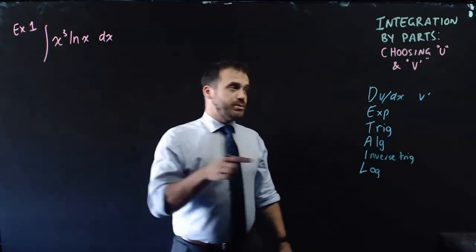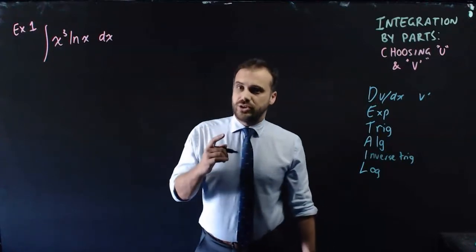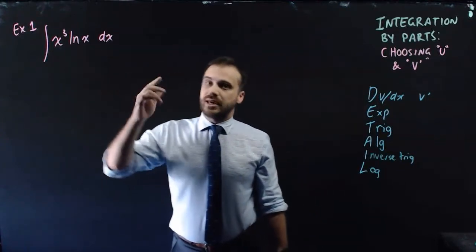Yes, there is. There's x cubed in there. I'm going to stop there. I want dv/dx, I want v dash to be x cubed, which means that u is going to be ln x.